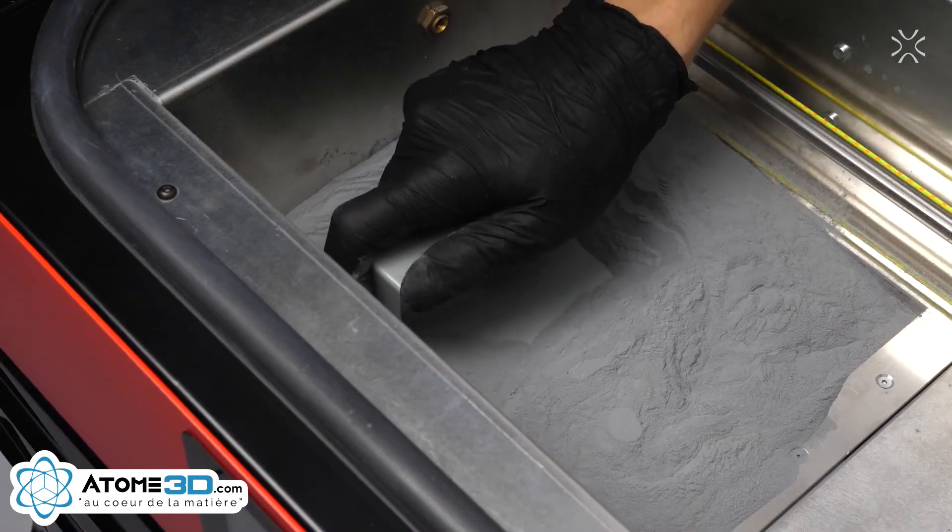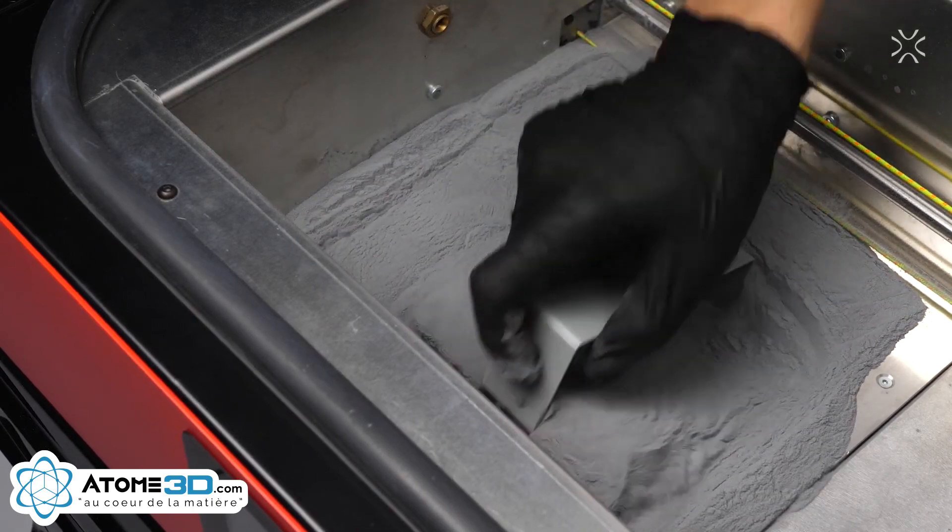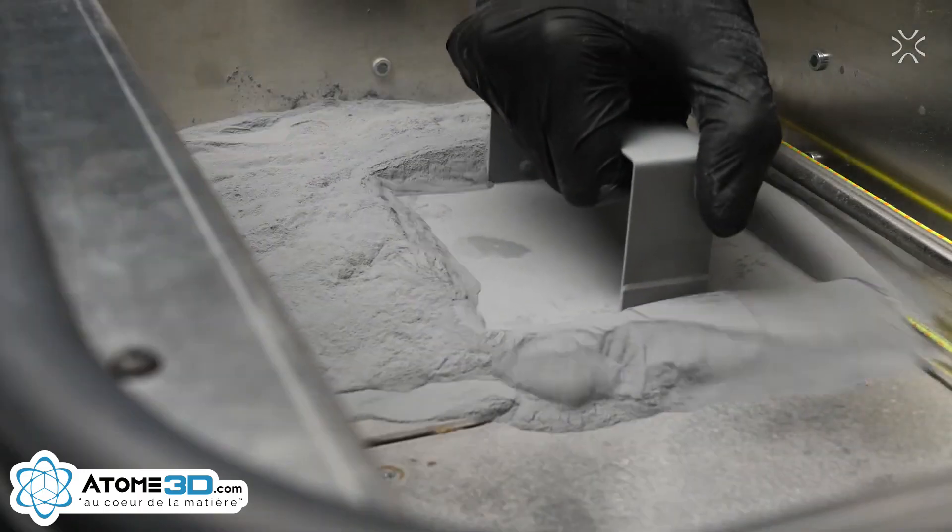Start compacting the powder by gently pressing it with a powder trowel. Don't use too much force and stop when you feel a slight resistance.